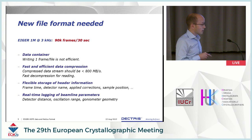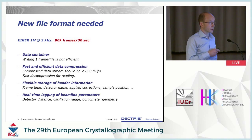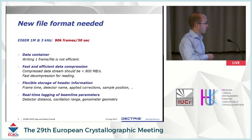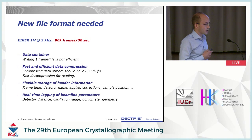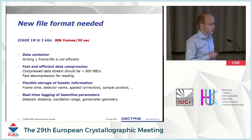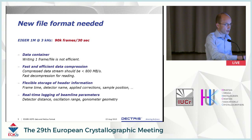Several thousand frames in an extremely short period of time — so what we want to do is use a container format, so we can put everything into a big container and you don't have to deal with all these files. We want fast compression, but also good and especially transparent compression that the user doesn't really notice. And then header information from the detector, and also experiment information from the beamline or from the diffractometer, or more generally from the user, like information relating to the experiment.